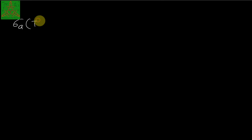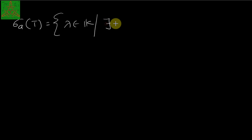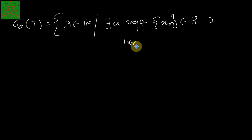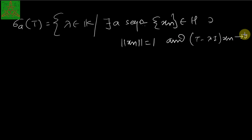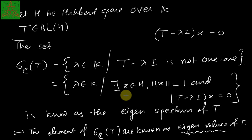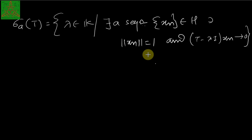So the approximate eigen spectrum can also be written as the set of all λ in K such that there exists a sequence X_n in H with ‖X_n‖ = 1 and (T − λI)X_n → 0. Contrast this with the eigen spectrum, where there exists a single point X with ‖X‖ = 1 such that (T − λI)X = 0. Here we are approximating that value by a sequence converging to 0.